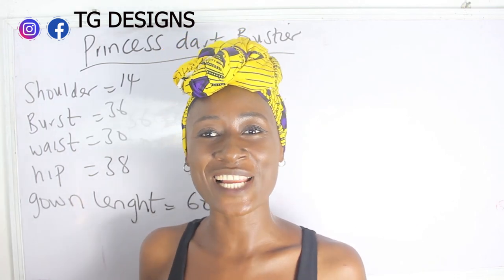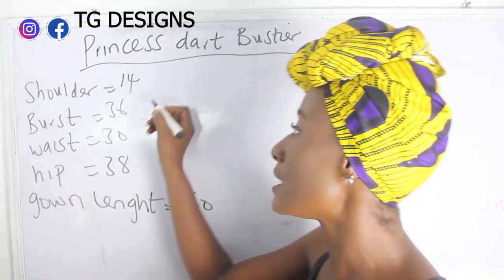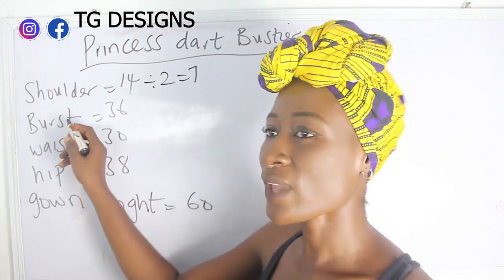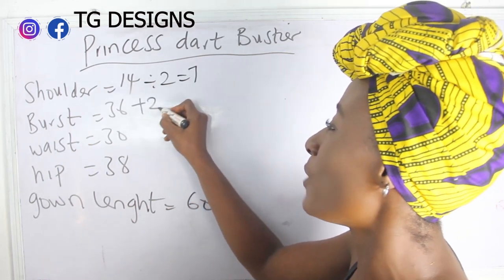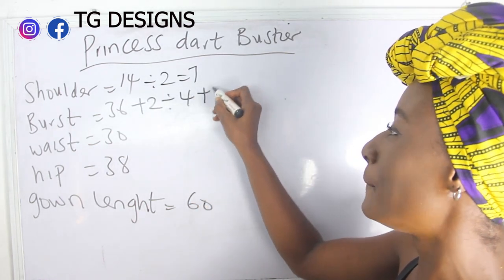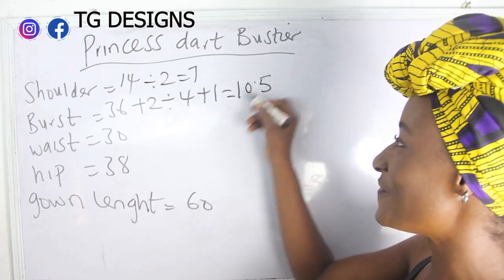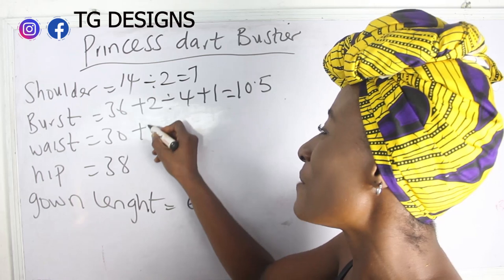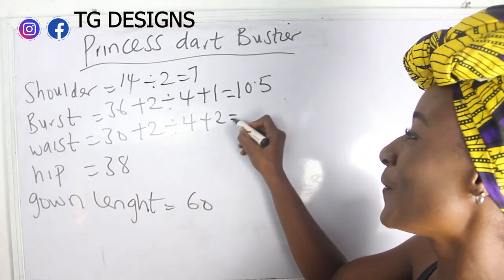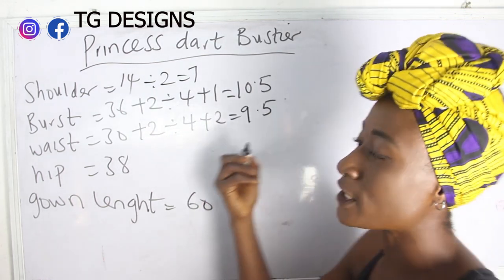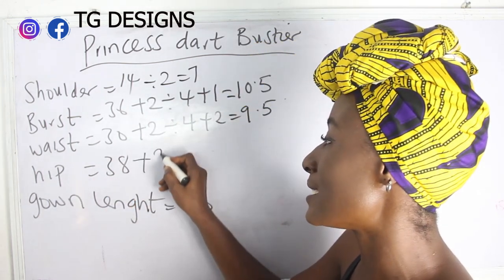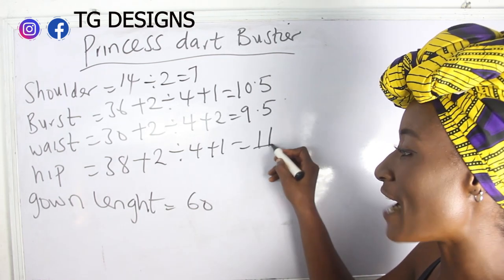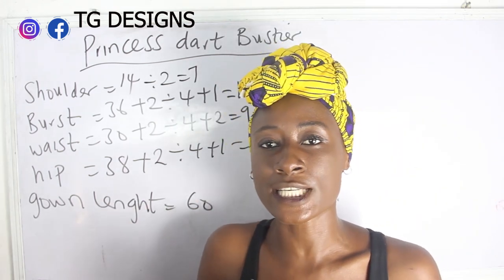Let's go ahead and calculate our measurements. Our shoulder measurement is 14; 14 divided by 2, we have 7. Our bust is 36; 36 plus 2 divided by 4 plus 1, we have 10.5. Our waist is 38; 38 plus 2 divided by 4 plus 1, we have 11 inches. Our gown length is 60 inches.